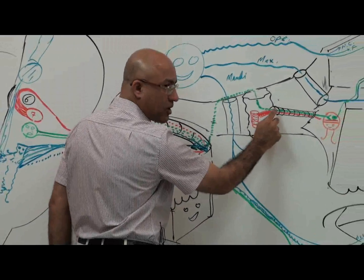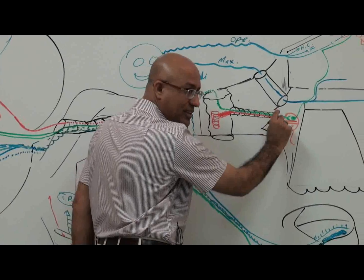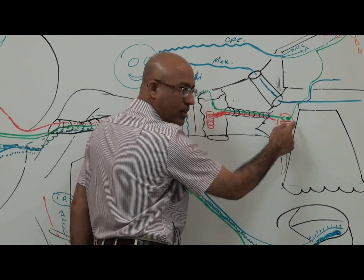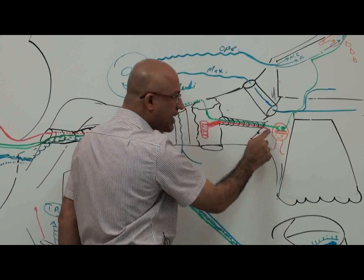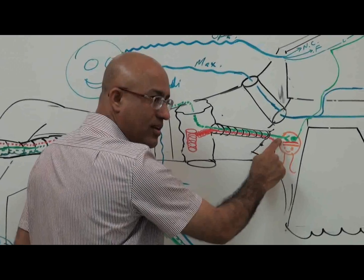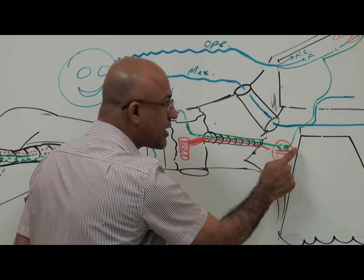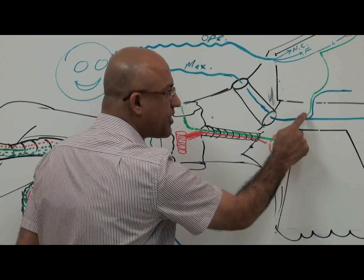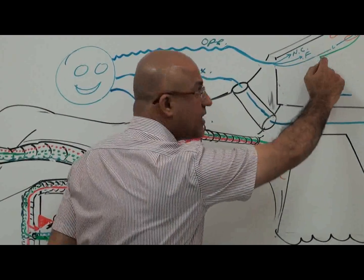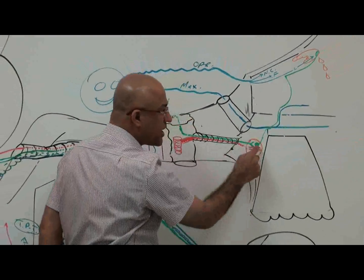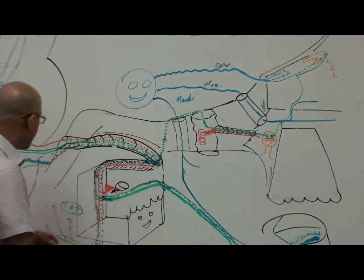The lacrimatory pathway travels through the greater petrosal nerve, which meets the deep petrosal nerve at foramen lacerum. Together these fibers travel as the nerve of the pterygoid canal to the pterygopalatine ganglion, where the preganglionic lacrimatory parasympathetic fibers end. From there, lacrimatory fibers jump to the zygomatic branch of maxillary nerve, then to the lacrimal branch of ophthalmic, and reach the lacrimal gland. Other branches go to nasal, paranasal, and palatine glands.